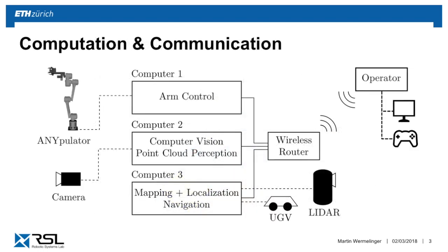The whole computational and communication setup is very similar to ANYmal. There are also three computers doing the main computation, with several nodes running on each. They are connected through a wired network and communicate over ROS. We have the navigation PC, which is the onboard PC of Husky, responsible for controlling the base, but also for processing the point cloud, localization, navigation, and so on.